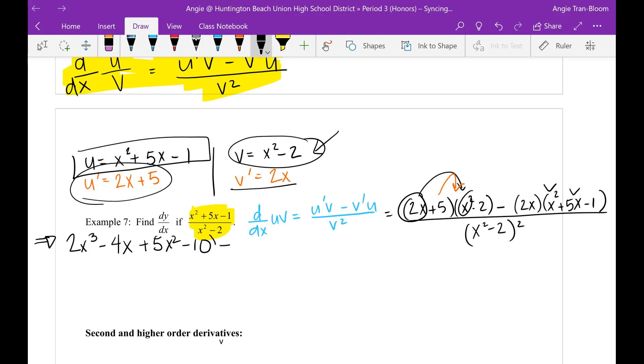Now let's do the other one. I'm going to put that in parentheses and then this in parentheses because that way later I'm hopefully not going to make silly mistakes on distribution. So that's going to be 2x times x squared is now 2x to the third. I will distribute the negative later. 2x times 5x is now 10x squared. 2x times minus 2 is now negative 2x all over x squared minus 2 squared. Keep going.